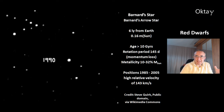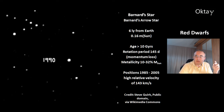Another nearby red dwarf is Barnard's Star, also called Barnard's arrow star, at a distance of 6 light years from Earth. It has 16% of the sun's mass and an age of 10 billion years — more than double the age of the sun. Its rotation period is 145 days because it has lost angular momentum over time to stellar winds. Since it's so old, the metallicity of the star is one-tenth to one-third of the sun's. Metallicity means the percentage of elements other than hydrogen and helium. This movie shows the movement of the star from 1985 to 2005, with a high relative velocity of 143 kilometers per second.